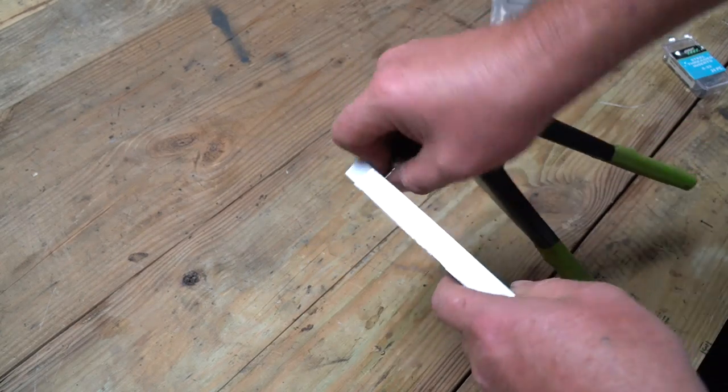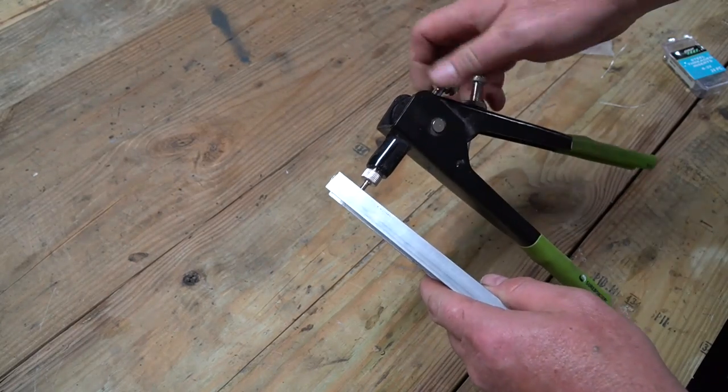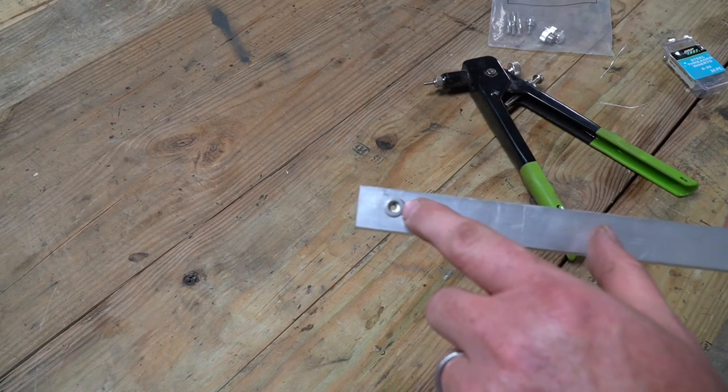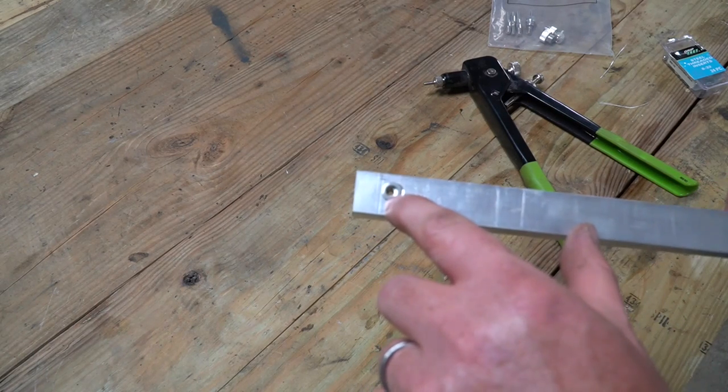And now your insert is in. And so what you have is you have a rivet with an insert that is threaded.